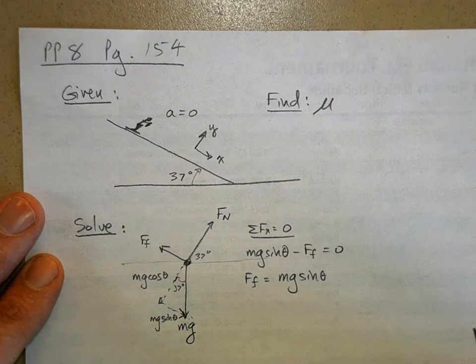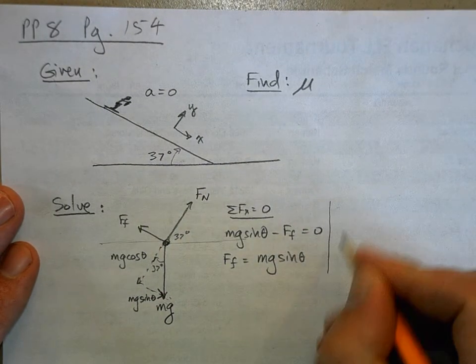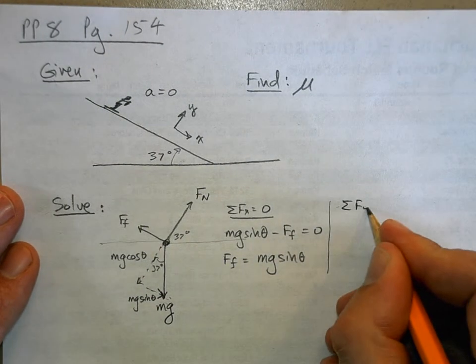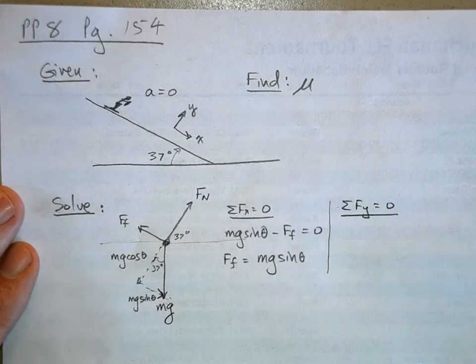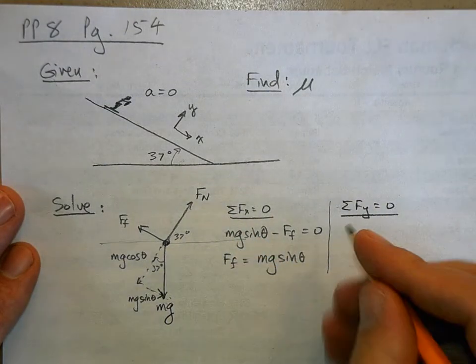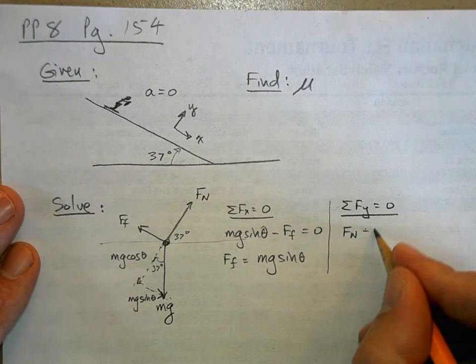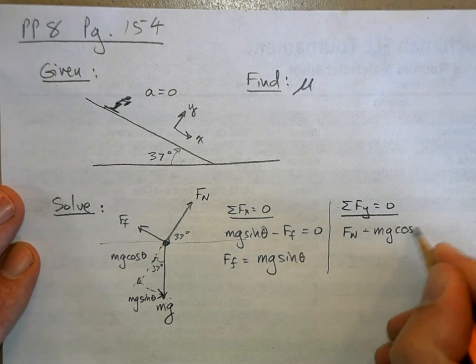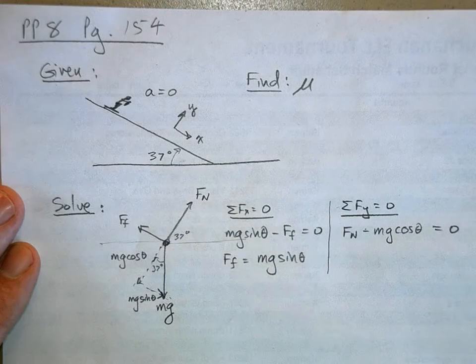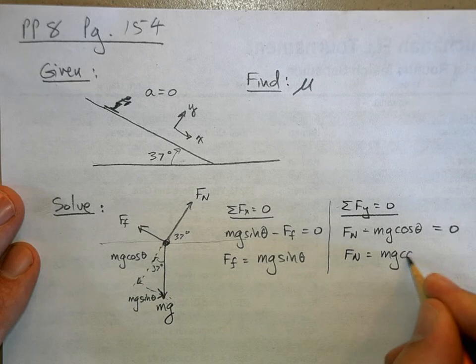Now if I sum the forces in the y direction equals zero, well in the y direction there's only two forces: there's the normal force and then minus mg cosine theta. And again they have to add up equal to zero, so the normal force is equal to mg cosine theta.